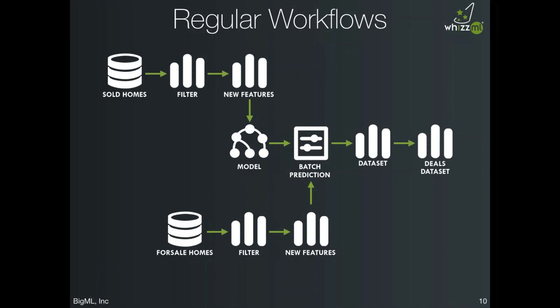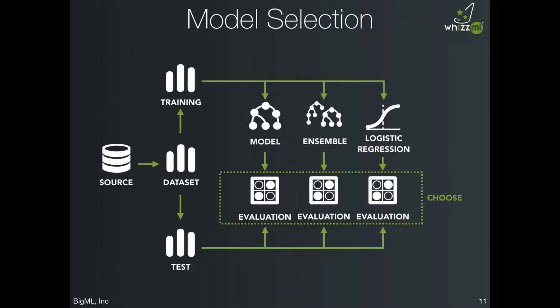Let's look at workflows for tuning. BigML offers a few algorithm choices: a model versus an ensemble, and within ensembles you can do bagging or random forest, or logistic regression. Depending on your data, one will perform better. We can automate model selection by trying them all — take a source, create a dataset, split into training and test, build all possible models (model, ensemble, logistic regression), evaluate them all, and then have a selection process that chooses which model performed best on evaluation.